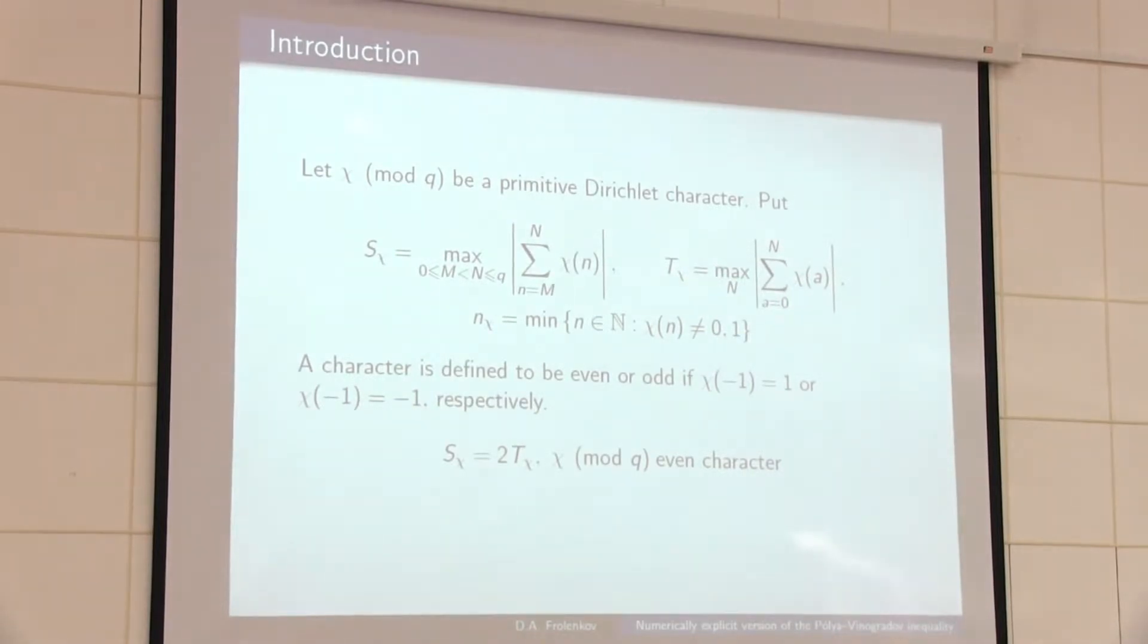I would like to recall the definition of even characters and odd characters. It can be easy to verify that in the case of even characters, these two values are related by these equations. First, I would like to say why it's very important to have a very good bound for this value.